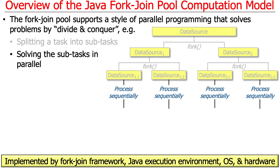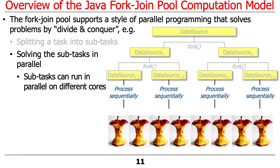As you're forking things off, those tasks are being put into the worker thread pool, and those subtasks are then run to completion. Once something has been forked to a small enough element, it will run to completion, and we'll have all these other things running at the same time. Any given atomically-sized subtask will run sequentially, but the group of them will run in parallel. This implementation is handled by the fork-join framework, the Java execution environment, the operating system, and the hardware — multiple layers collaborating. All these things run in parallel on different cores, and the more cores, the better.